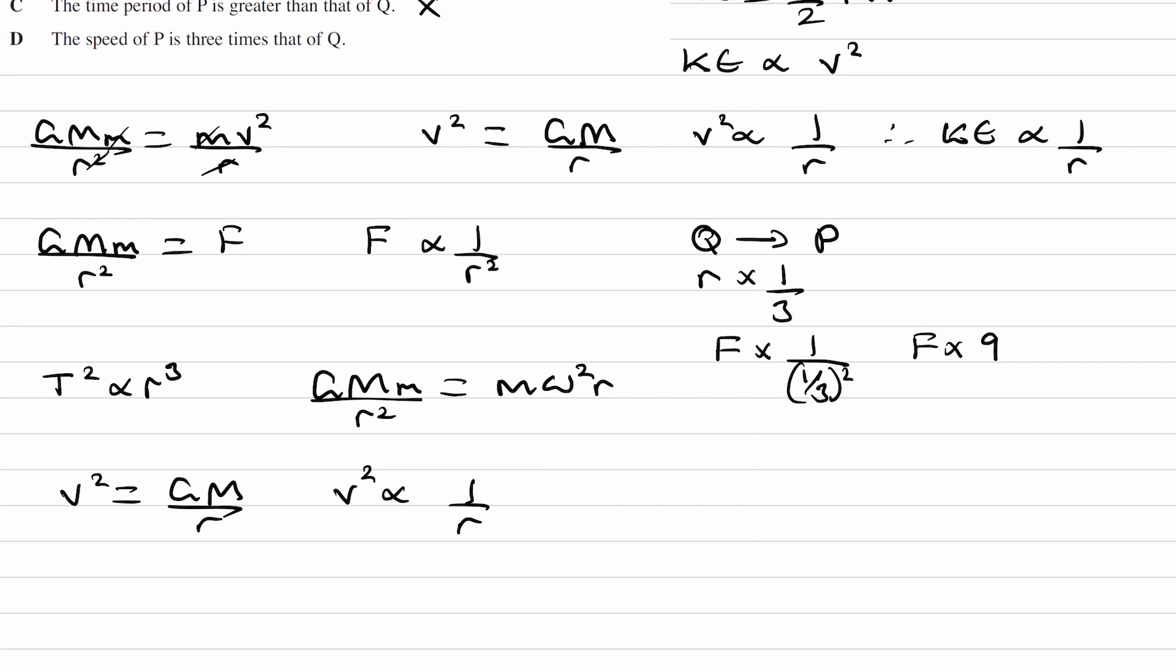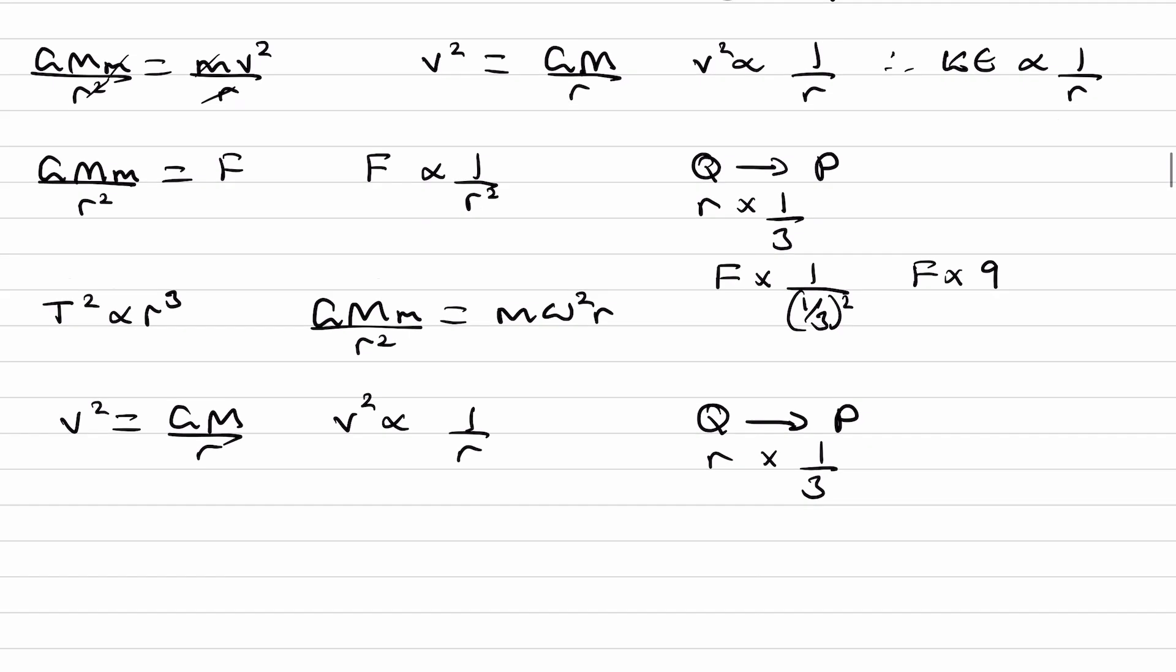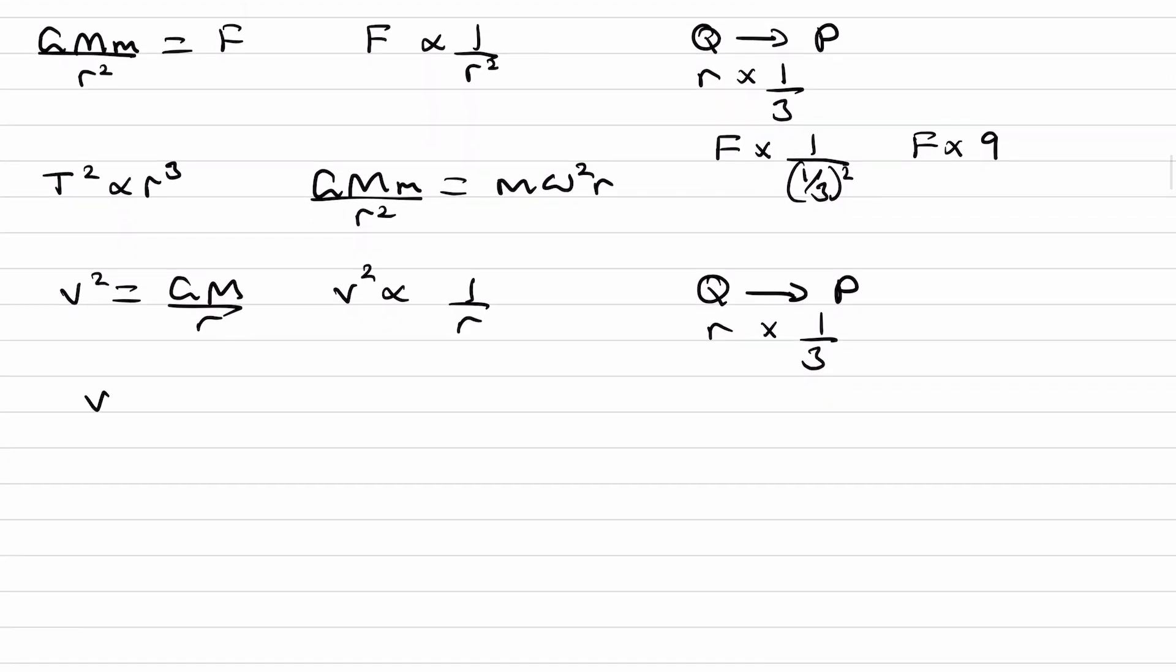So we're going from, we're comparing the speed of P. We're saying that the speed of P is three times that of Q. Okay, so when going from Q to P, we actually have some of it written down here already. So we're going from Q to P.